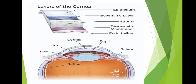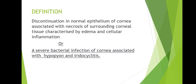Histologically, from outer to inner, the cornea consists of epithelium, Bowman's layer, stroma, Descemet's membrane, and endothelium. The definition: discontinuation in the normal epithelium of the cornea associated with necrosis of surrounding corneal tissue, characterized by edema and cellular inflammation. It can also be defined as a severe bacterial infection of the cornea associated with hypopyon and iridocyclitis.